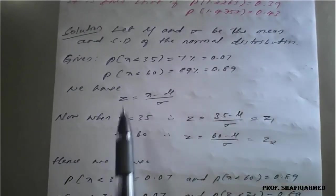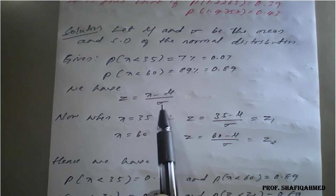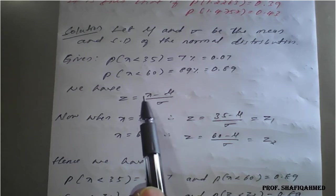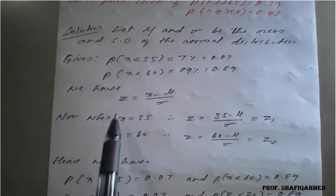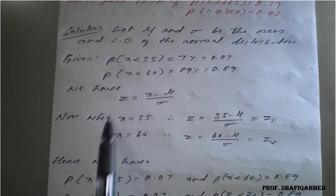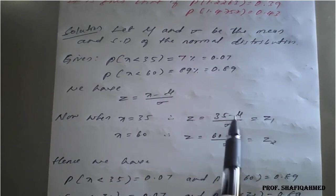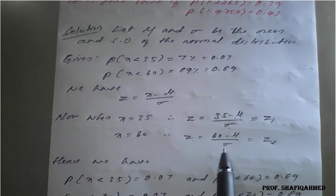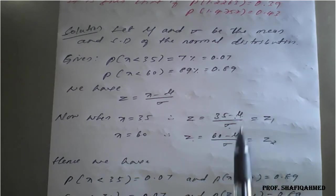Now we know that Z is given by X minus mu upon rho. So we need to find the value of mu and rho now. So we can fill the value of X as, when X is equal to 35, from this, it is Z is equal to 35 minus mu upon rho which is nothing but Z1. And when X is equal to 60, so Z will become 60 minus mu upon rho is equal to Z2.